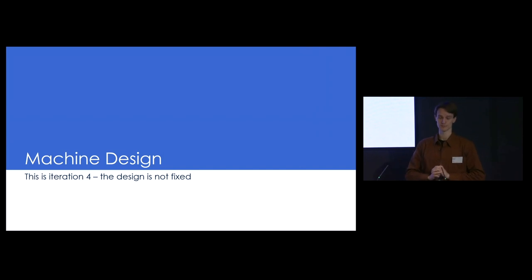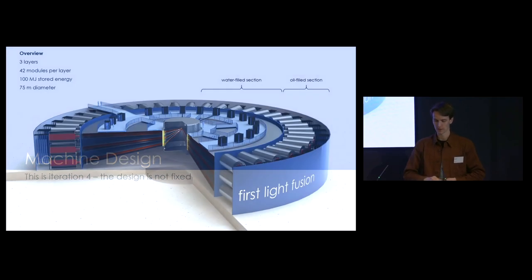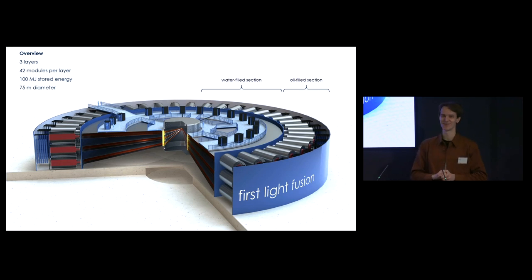The machine design. This is the fourth iteration, fourth major iteration. The team have been pushing extremely hard over the last few weeks to bring this together for today. This is not the final design. The design is not fixed. This is a genuine opportunity to contribute and influence the design of the machine. This is what it could look like - modeled after the Z machine at Sandia, which works and has been around for a long time.